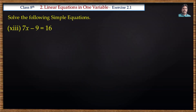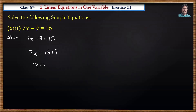Next problem: 7x minus 9 is equal to 16. We transpose minus 9 to the right side, it becomes plus 9: 7x is equal to 16 plus 9, which is 25. We need x value, so we divide by 7: x is equal to 25 by 7.